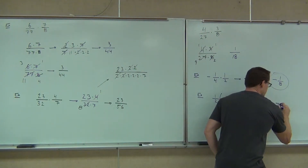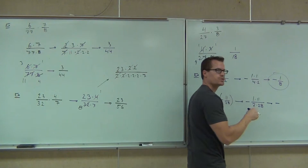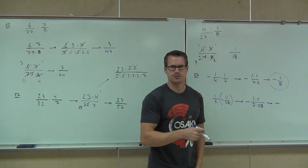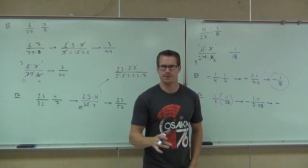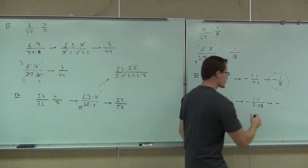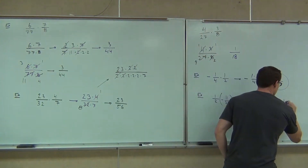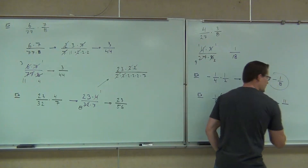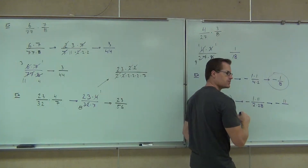I know we have a negative — don't lose that negative, don't forget about that. And then we're just going to have 11 over 56.